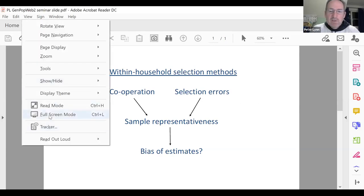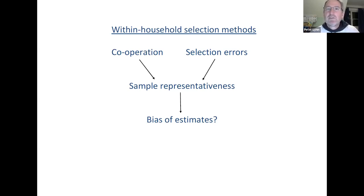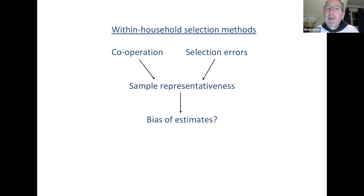I'm going to share one slide. I suggest it might be helpful to keep this in mind during the webinar. There are two error sources: the risk that cooperation may be affected by the selection method — which can affect non-response error — and the risk that the selection of a person to collect data from will be done incorrectly. Either of those things can potentially affect sample composition, sample representativeness, and ultimately bias our estimates. The same selection method might work better for one survey than another because the sample representativeness effects are more or less associated with the survey variables.